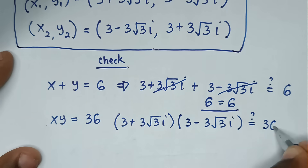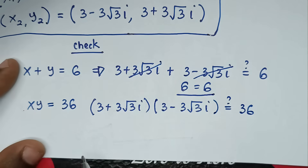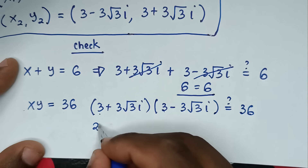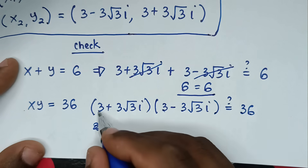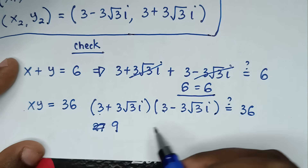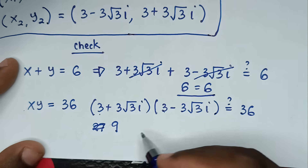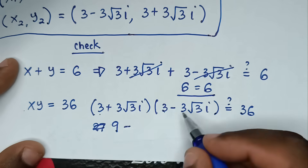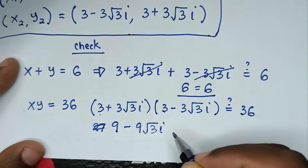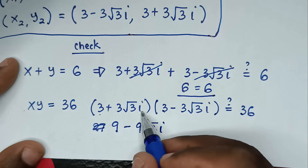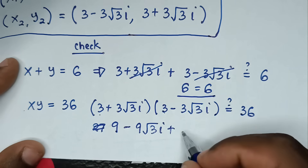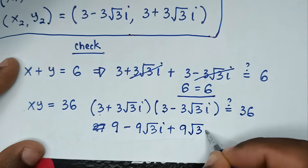Expanding: 3 times 3 is 9. 3 times negative 3 square root of 3i is negative 9 square root of 3i. Then 3 square root of 3i times 3 is positive 9 square root of 3i.